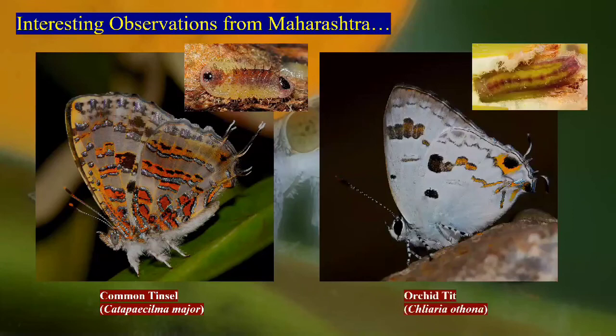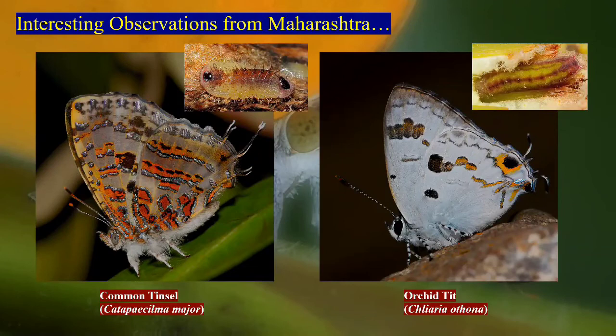Orchid tit is another interesting species reported along with its life cycle and new larval host plant records — orchids — in the northern parts of Maharashtra. A paper was published on its life cycle from the northernmost area of Western Ghats — Tungareshwar Wildlife Sanctuary and Sanjay Gandhi National Park. It is also present in southern parts and likely near Chhattisgarh — a small, beautiful, and very interesting species.